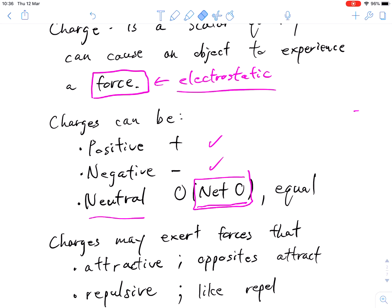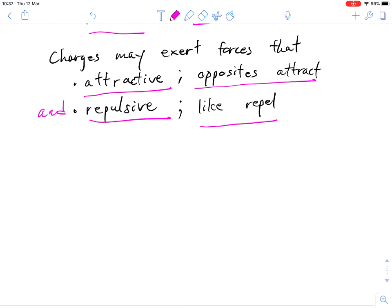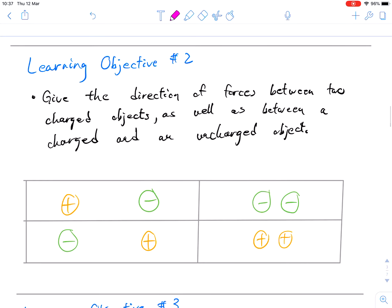Charges are measured in a unit called coulombs, and we'll cover that a little bit later. And charges, unlike gravity, can be attractive and it can also repel. So opposites attract and like charges repel. Let's have a quick look at what that looks like.